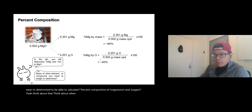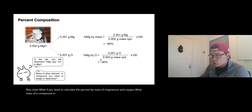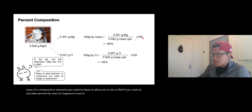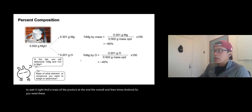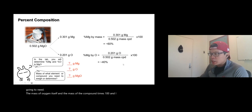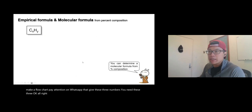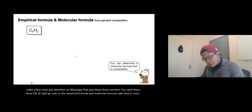Think about this: what masses do you need to weigh to calculate percent composition of magnesium and oxygen? To calculate percent by mass of magnesium, you need the mass of magnesium and the mass of the product. To calculate percent by mass of oxygen, you need the mass of oxygen itself and the mass of the compound. When you make your flow chart, pay attention to which steps give you these three numbers.